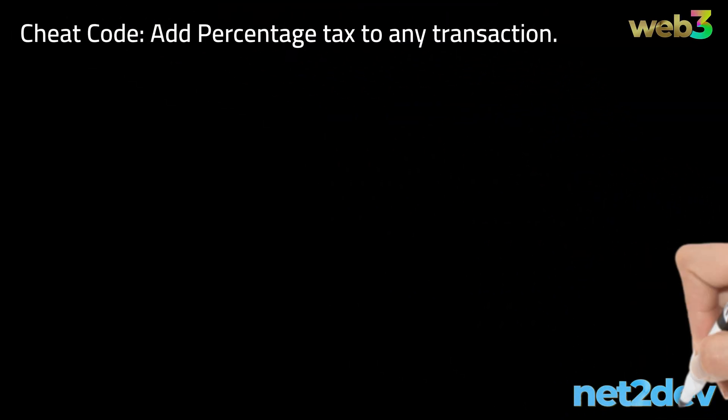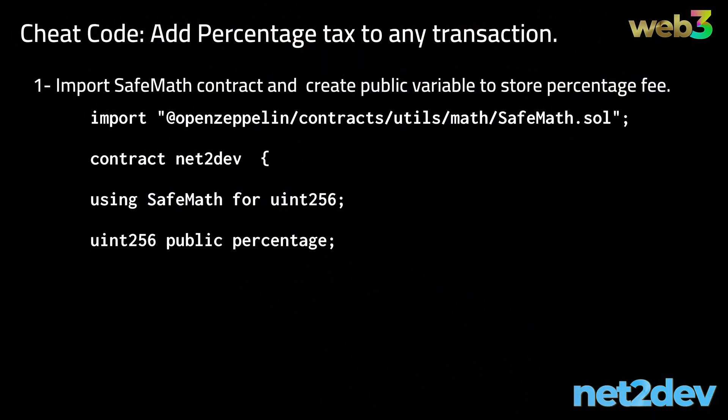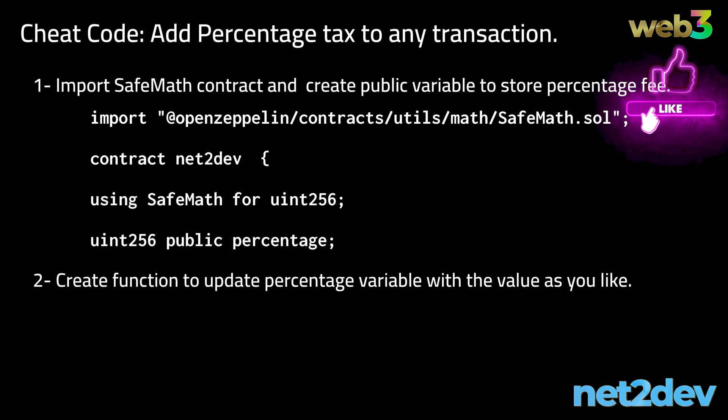Cheat code: add a percentage tax to any transaction. Step 1 — import the OpenZeppelin SafeMath utility contract, then create a public variable called percentage. Step 2 — create a function to update the percentage variable as you like.